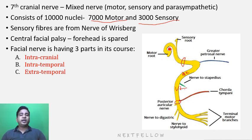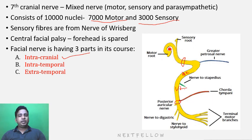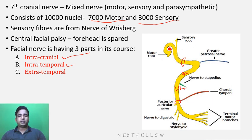The facial nerve can be divided into three sections. The first section is intracranial - starting from the pontomedullary junction until entry into the internal auditory canal. The second is intratemporal - from entry into the internal auditory canal till the stylomastoid foramen, entirely within the temporal bone. Beyond that is the extratemporal part, outside the temporal bone.